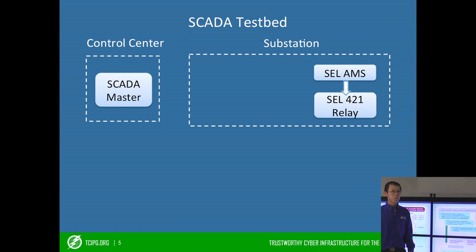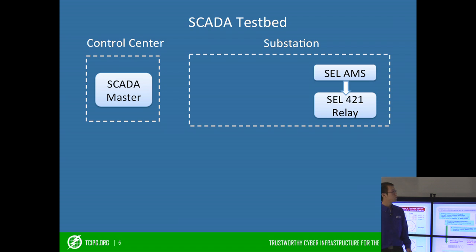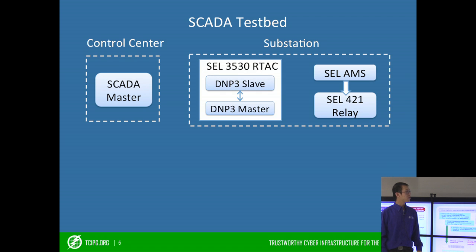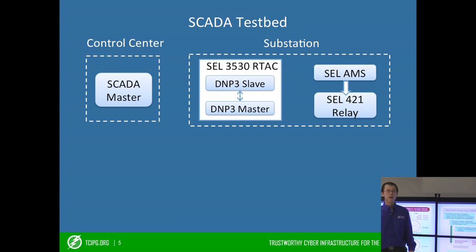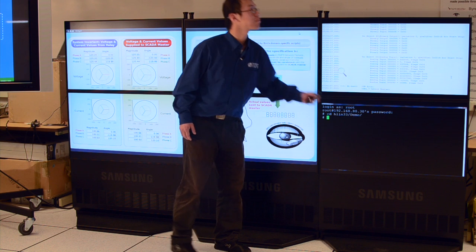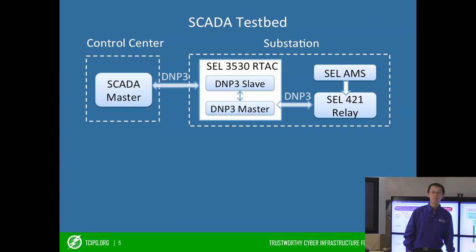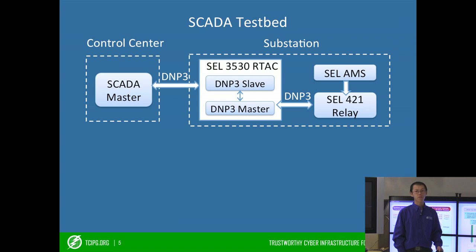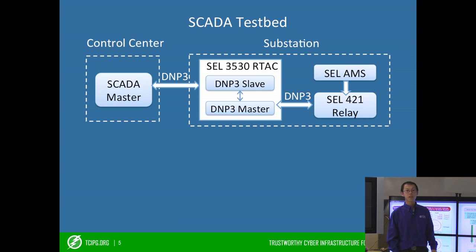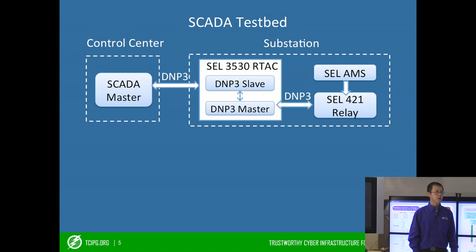The SEL AMS simulates an electrical line. It will produce voltage and current signals to the SEL 422 relay. The SEL 3530 RTAC is a data aggregator, and this is shown on this screen. It contains two software components: the DNP3 master retrieves the measurement data from the relay, and the DNP3 slave expects DNP3 requests from the SCADA master and replies with the collected measurement data.